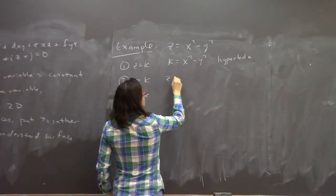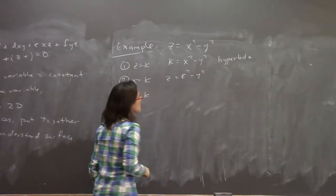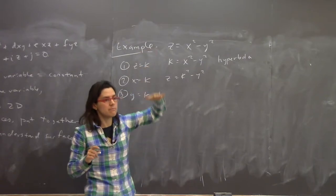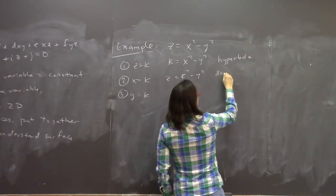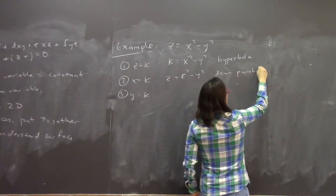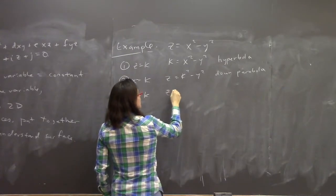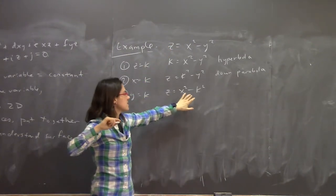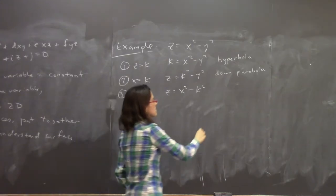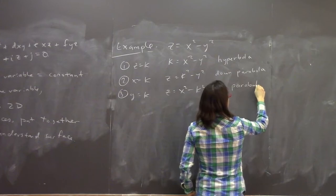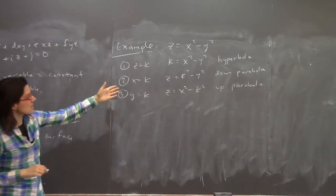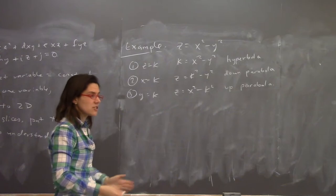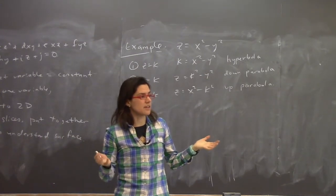If x equals a constant, we get z equals that constant squared minus y squared. Since z equals negative y squared is a downward parabola, this k squared just moves it up and down — so these are downward-facing parabolas. Similarly, if y is a constant, we get z equals x squared minus the constant squared, which is an upward-facing parabola shifted down.